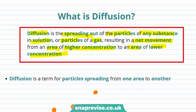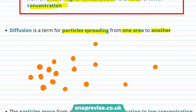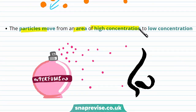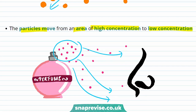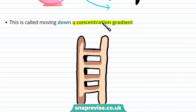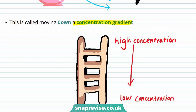A simple way of explaining diffusion is that it's a term for particles spreading out from one area to another — specifically, from an area of higher concentration to an area of lower concentration. For example, you can smell perfumes because particles diffuse from an area of high concentration near the bottle out to areas of lower concentration, including areas near your nose. Moving from high to low concentration is called moving down a concentration gradient. It's really important you remember this term for exams.